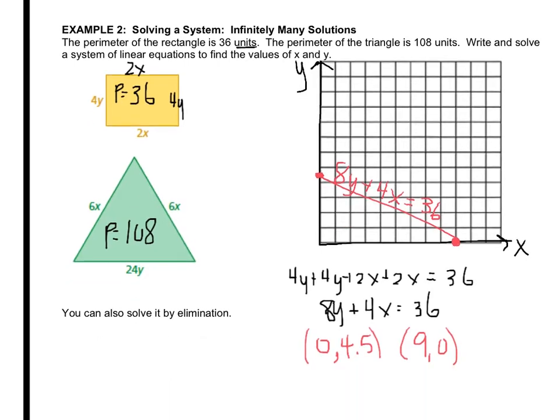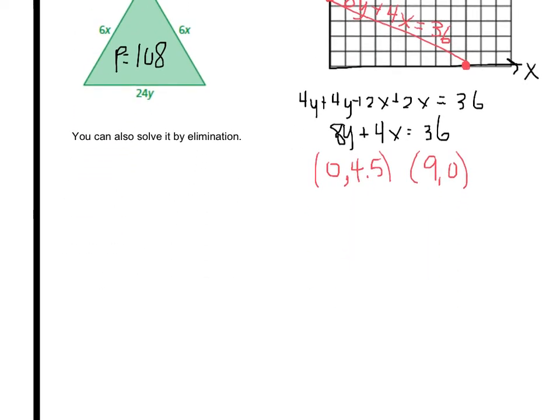Let's go to the triangle. Do the same thing for the triangle. I'm going to combine it in my head and say 12x plus 24y equals 108. I want you to do the same technique. Pause the video and find me the intercepts.